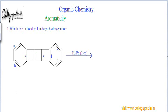This next problem is a higher-level version and was asked in the JEE Mains exam. Here, two equivalents of hydrogen gas are added, so two pi bonds will be hydrogenated. The question asks which two pi bonds must be hydrogenated. The concept is the same as before: we must destroy anti-aromaticity and safeguard aromaticity.